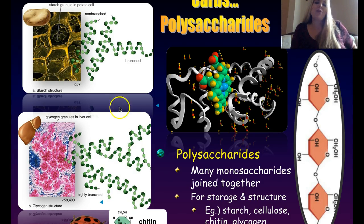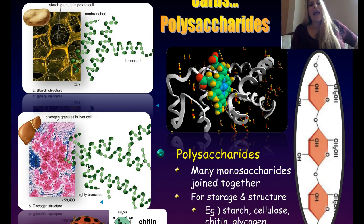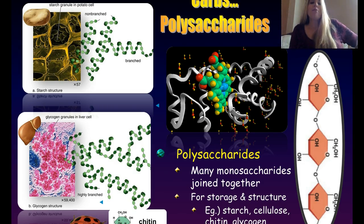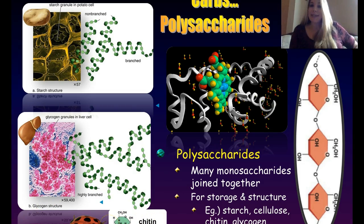Animals use glycogen for energy storage. For structural roles, insects and their relatives — crabs, lobsters, shrimp — have exoskeletons made of a polysaccharide called chitin.